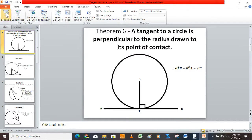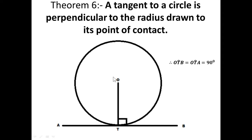Hello viewers, my name is Mr. Divanja. In our last video we talked about two theorems in circle geometry: the opposite angles in a cyclic quadrilateral are supplementary, and the exterior angle of a cyclic quadrilateral is equal to the opposite interior angle. We used these two theorems to solve problems.